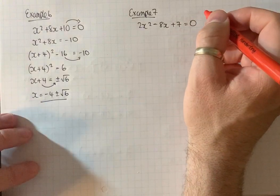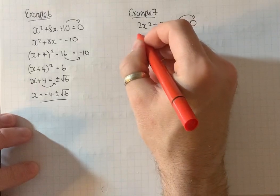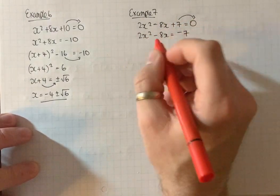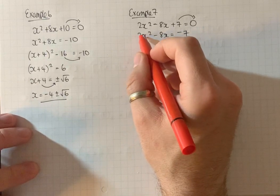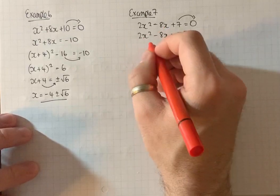First thing I'm going to do here is whack the 7 over. Now I don't want to deal with this 2, so rather than factorizing out, which can be a little tricky, I'm just going to divide everything by 2. I'm going to halve everything.